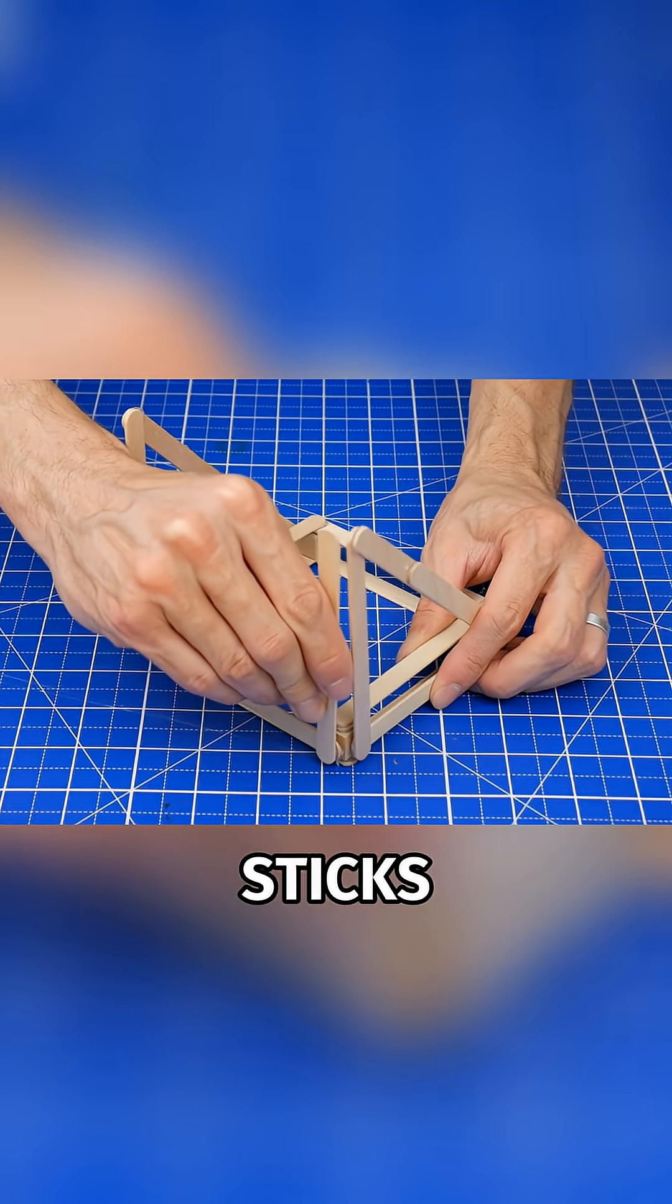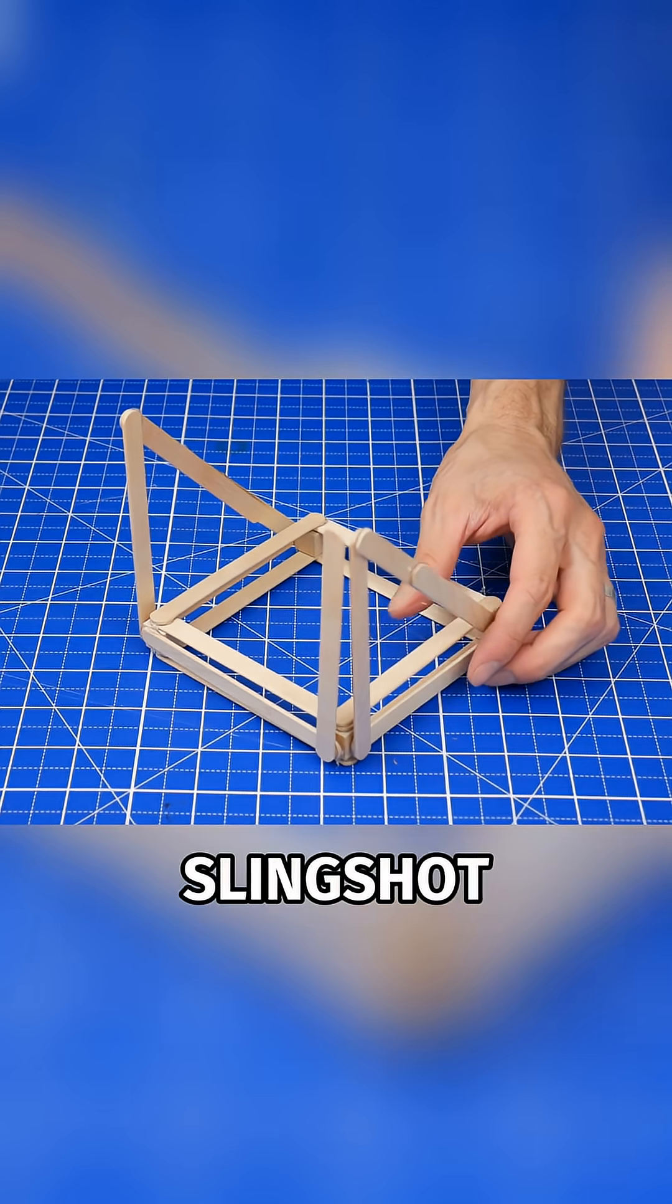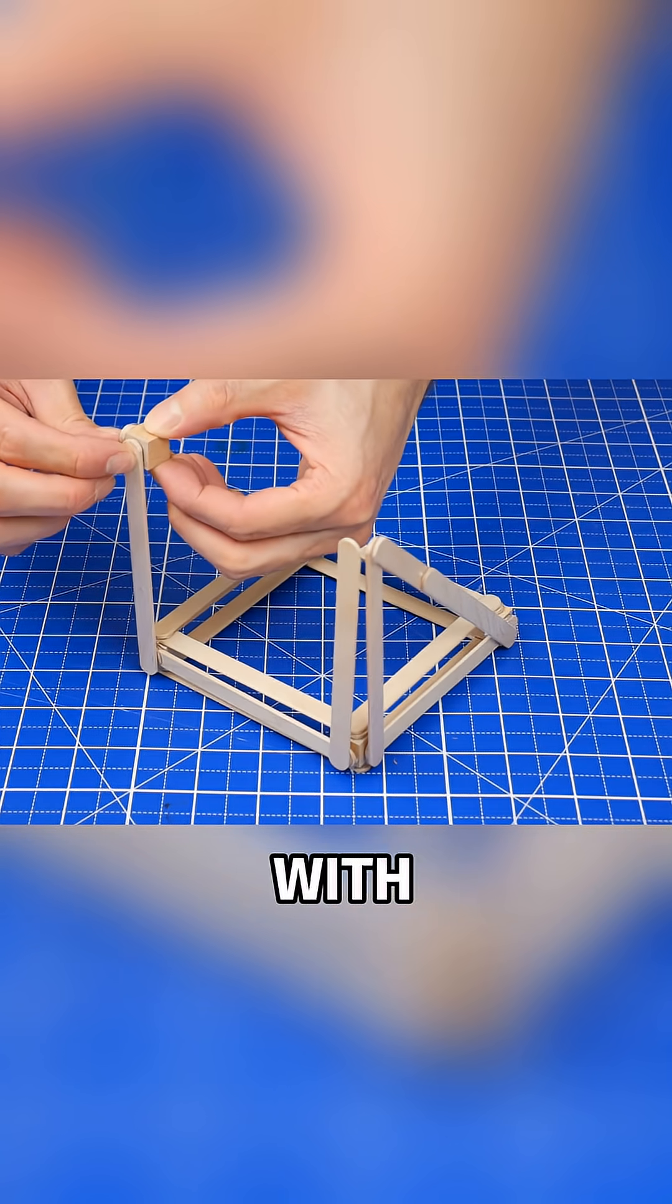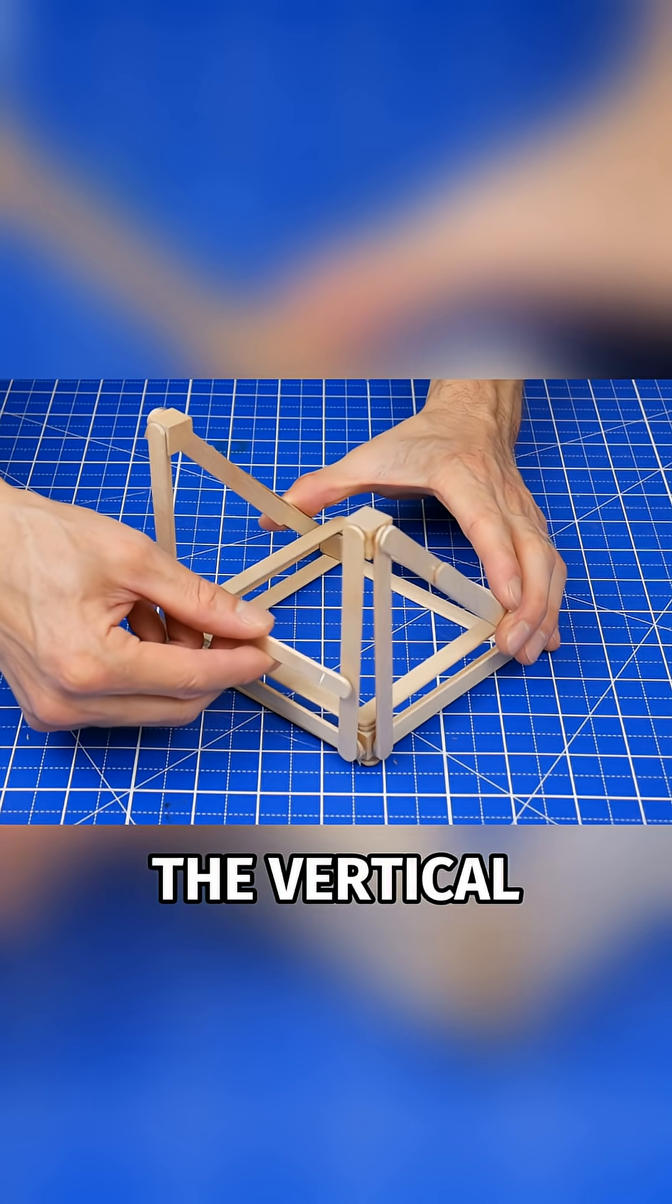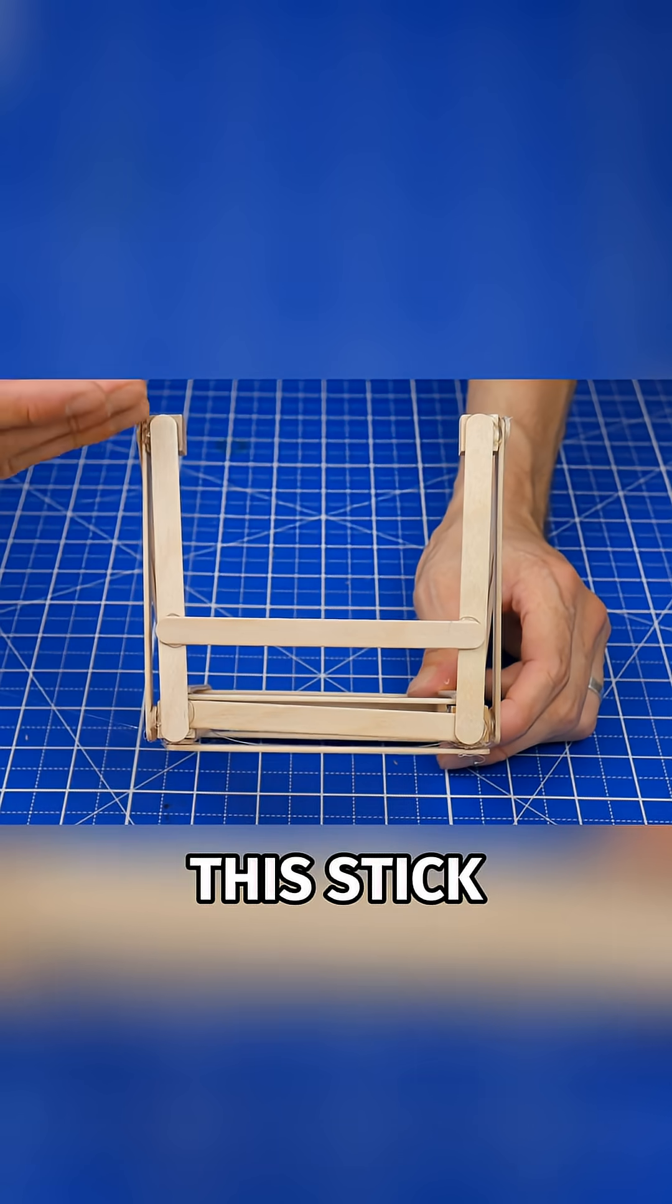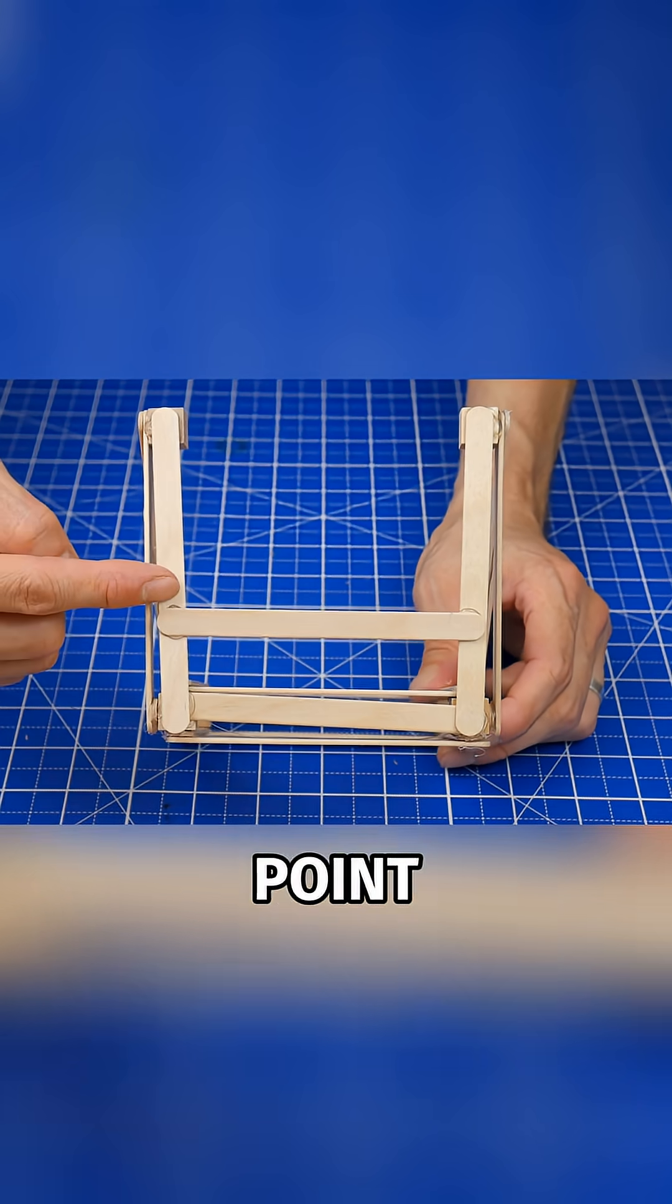Next, glue two more vertical sticks onto the front corners of the slingshot. Then connect the vertical sticks with another cube on top. Finish the structure by gluing one more stick that connects the vertical columns. Make sure that the stick is lower than the halfway point.